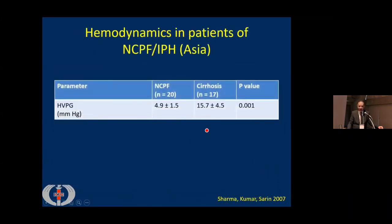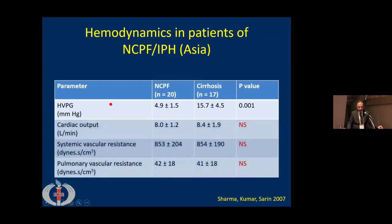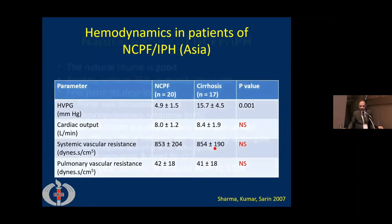We studied HVPG and found that compared to cirrhosis, the HVPG in idiopathic non-cirrhotic portal hypertension is much lower. However, systemic hemodynamic derangements — including cardiac output, systemic vascular resistance, and pulmonary vascular resistance — are similar to those of early cirrhotics.